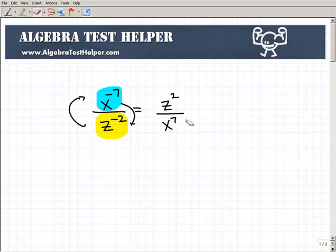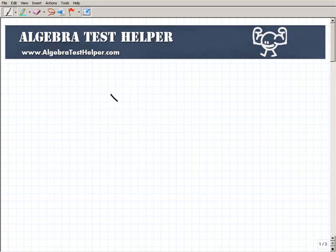Let's do one more example. What if we had x to the negative 2 over y to the negative 3 times x squared? How about this situation?